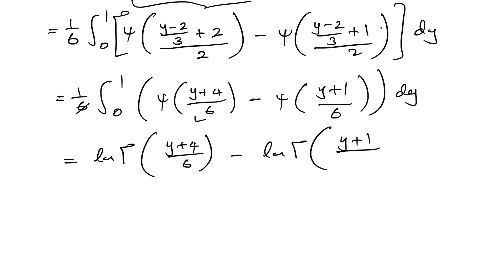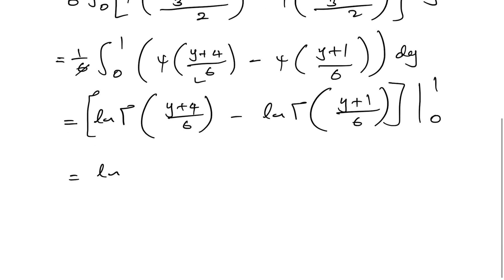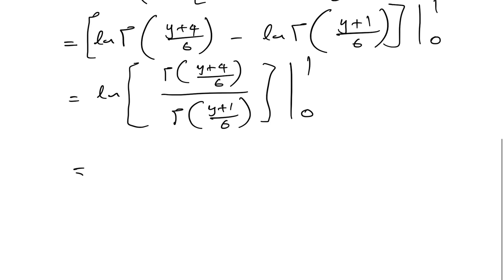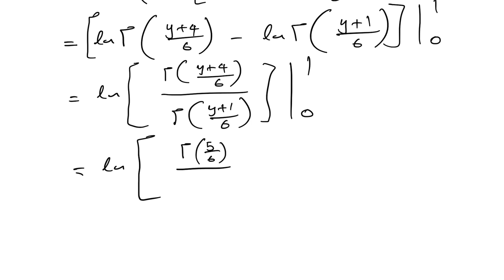Using the property of natural logs, this becomes ln[Γ((y+4)/6) / Γ((y+1)/6)] evaluated from 0 to 1. Applying the limits: at y=1 we get ln[Γ(5/6) / Γ(1/3)], and at y=0 we get ln[Γ(4/6) / Γ(1/6)] which, after subtracting, becomes ln[Γ(5/6) / Γ(1/3)] minus ln[Γ(2/3) / Γ(1/6)].